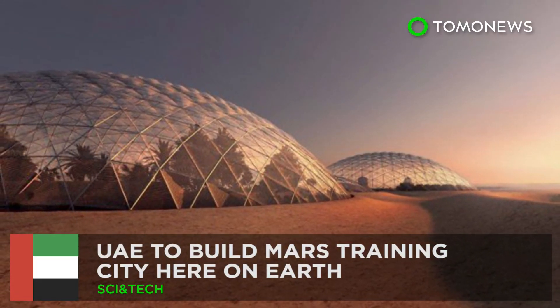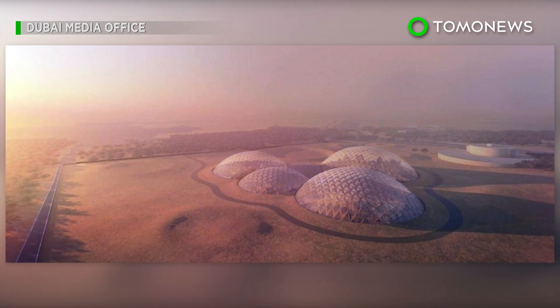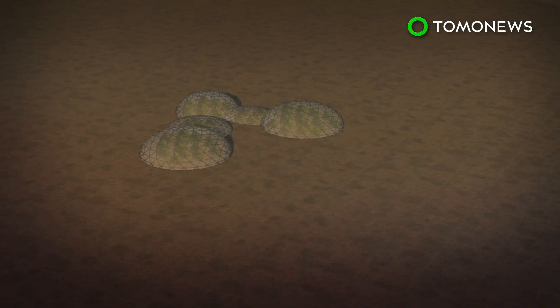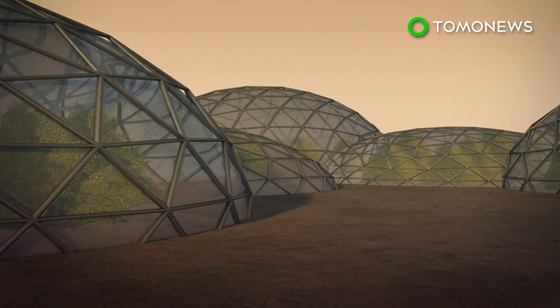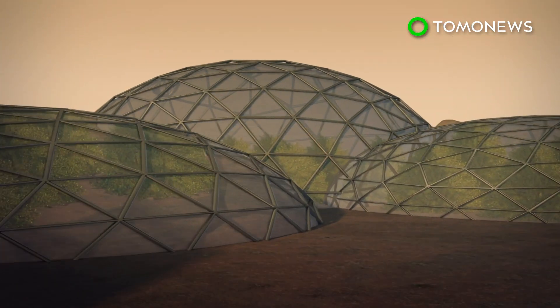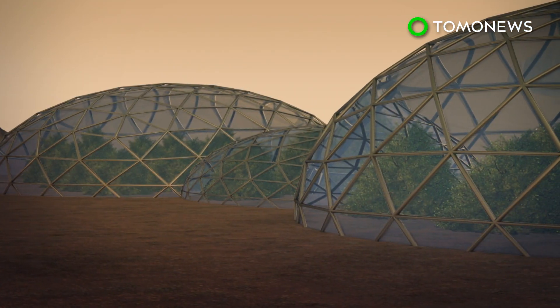UAE to Build Mars Training City Here on Earth. The United Arab Emirates is preparing to go to Mars. The UAE is planning to build a $136 million city here on Earth called Mars Science City, which consists of interconnected dome structures that will span 1.9 million square feet.